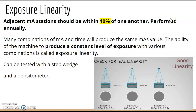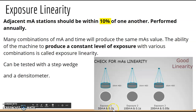Exposure linearity means adjacent mA stations should be within 10% of one another; this is tested annually. It tests the machine's ability to produce a constant level of exposure even when varying mA and time combinations. It can be tested with a step wedge and densitometer.